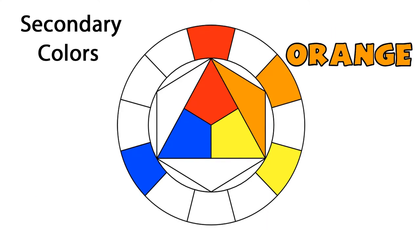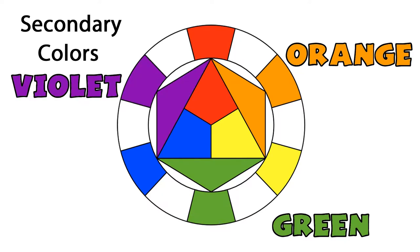Secondary colors are made by mixing two primary colors. Orange is made by combining red and yellow. Green is made by combining yellow and blue. Violet is made by combining red and blue.